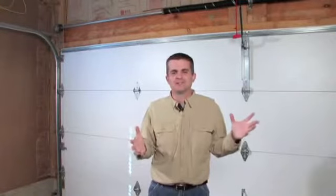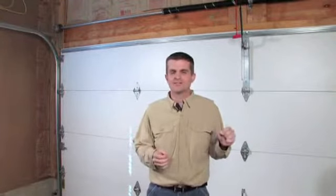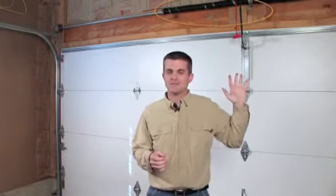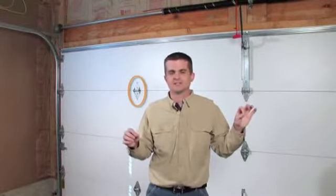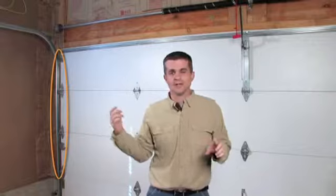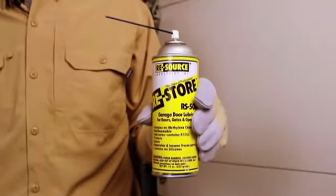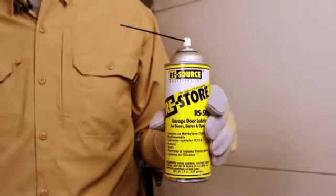Another form of general maintenance you can perform yourself a couple times a year is the lubrication of your garage door. There are three areas to focus on: the springs above the garage door, the hinges between the sections, and the roller areas. You want to use garage door lubricant. Never use a penetrating oil.